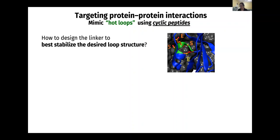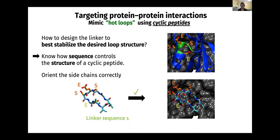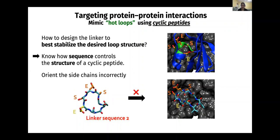This problem will be solved if I actually know how sequence controls the structure of a cyclic peptide. For example, I can design linker sequence number one, and this is what the resulting cyclic peptide looks like — the S-E-S-E residues point in exactly the direction I want, so this should be a good binder. With a different linker, you still have S-E-S-E residues, but now they are pointing in random directions that you don't want, so that will not be a very good binder.